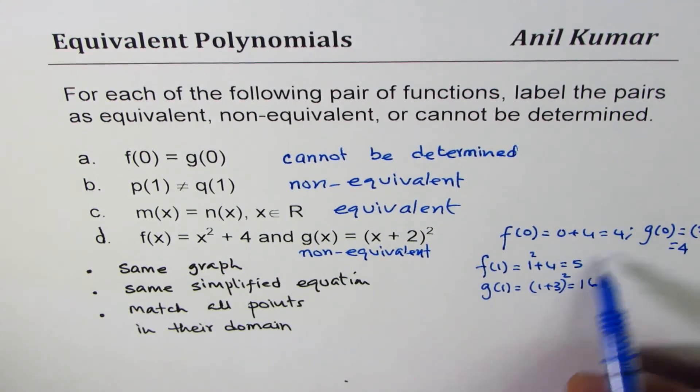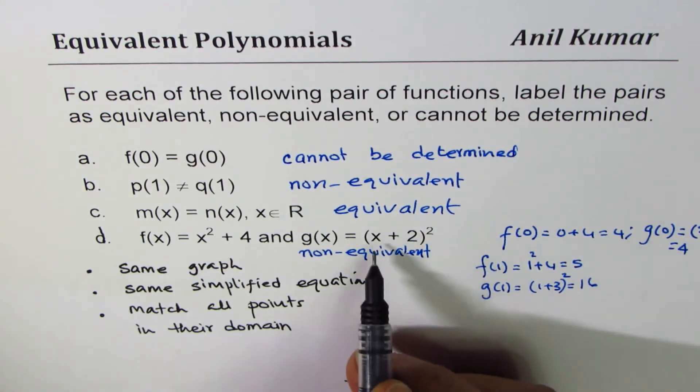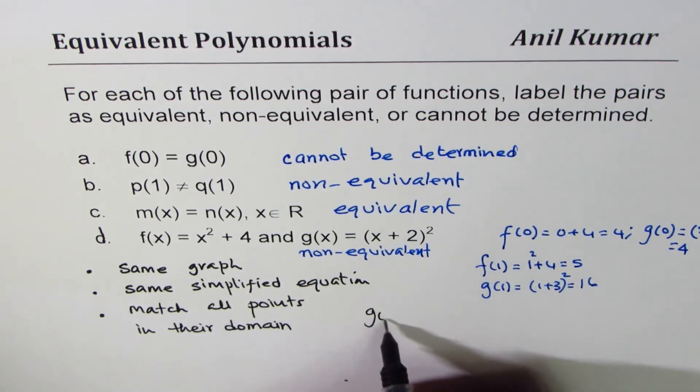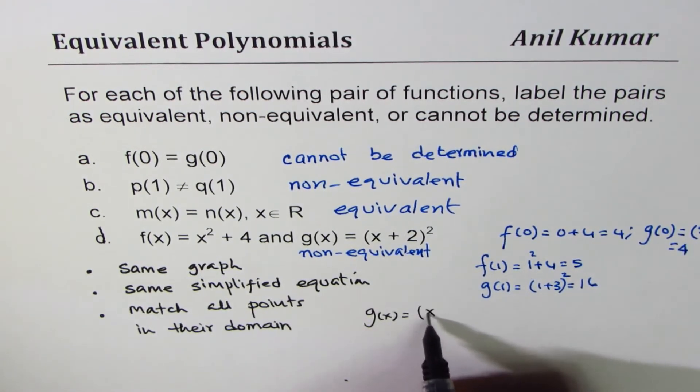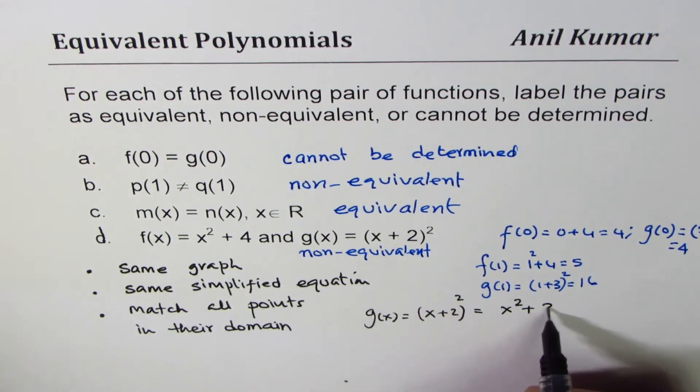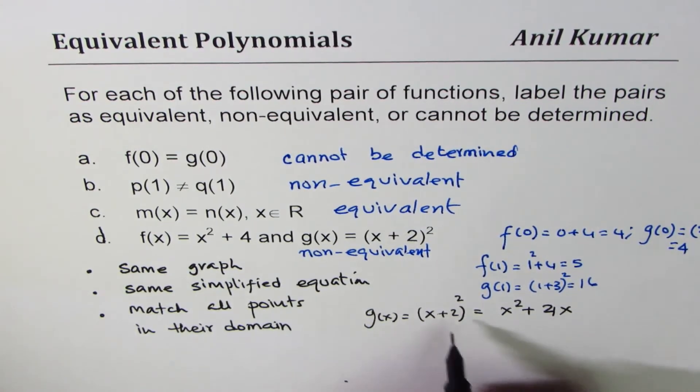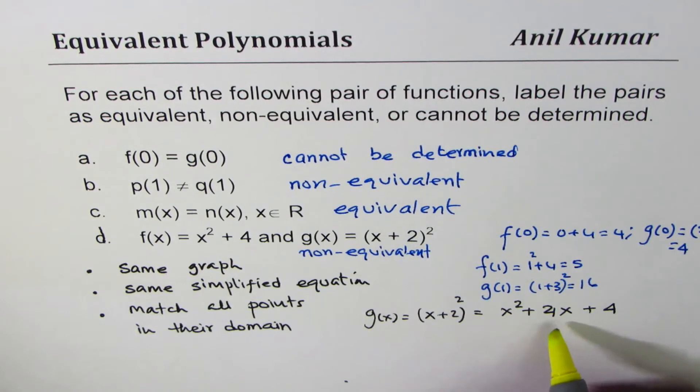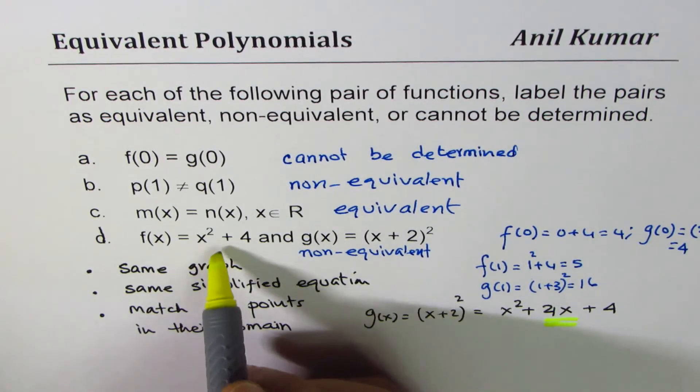So you could do by checking points as we did. Alternate method could be we just expand g(x), which is (x + 2) whole square. You could write this as x squared plus 2 times 2x, which is 4x, plus 2 squared, which is 4. So expand it and you can clearly see that one term is missing: 4x is not there.